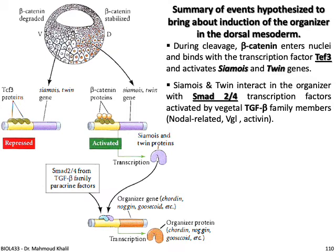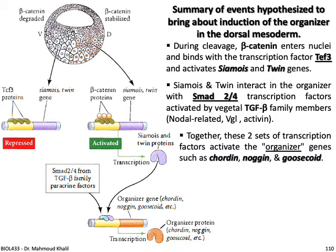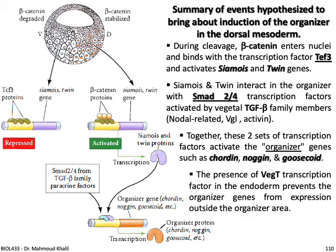Once activated, the siamois and twin proteins interact with two other proteins — Smad2 and Smad4 — transcription factors activated by TGF-beta family members, which are nodal-related and Vgl genes active in this region. Together, these two sets of transcription factors activate the organizer genes such as chordin, noggin, and goosecoid. The presence of the Vegt transcription factor in the endoderm prevents the organizer genes from being expressed outside the organizer.